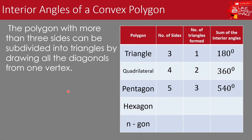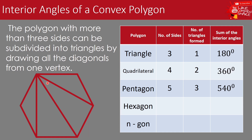Now let us have the hexagon. We draw a hexagon and form diagonals from one vertex — one, two, three diagonals. For filling in the table: hexagon has six sides. The number of triangles formed by drawing diagonals from one vertex is four — one, two, three, and four. Since we have four triangles, we multiply by 180 degrees: four times 180 equals 720 degrees. Therefore, the sum of the interior angles of a hexagon is 720 degrees. But how about if we have an n-gon?